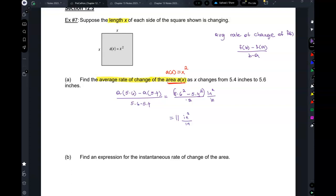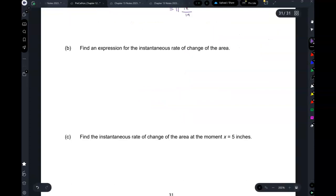So find the expression for the instantaneous rate of change of the area. The instantaneous rate of change of the area, this is going to be the limit as h approaches zero. Now the function is x squared, so it's going to be (x + h) squared minus x squared over h. Same thing as we've been doing. So this is going to be the limit as h approaches zero, x squared plus 2xh plus h squared minus x squared over h.